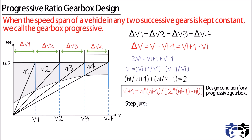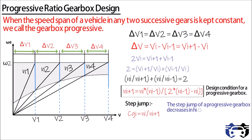The step jump is given by CGi equals ni divided by ni plus 1. You can see from the curve that the step jump of a progressive gearbox decreases in higher gears, and CGi equals 2 minus 1 divided by CGi minus 1. So if you want to make a progressive type gearbox, you can use this design condition with a varying step jump.